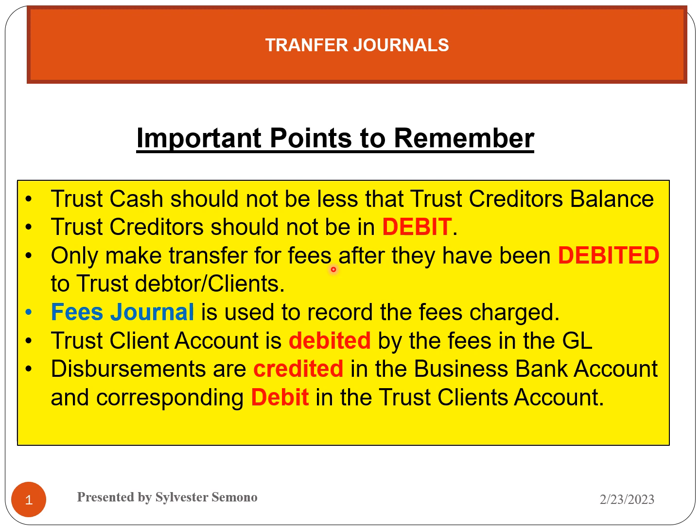After charging the fees, the client is owing us, and we compile what we call the fees general journal. There are different types of journals — the cash book receipts, cash book payments, sales journal, sales returns, and petty cash — all called subsidiary journals or books of prime entry. These books are used to summarize transactions according to their nature: all cash received goes to the cash book receipts, all cash payments to the cash book payments, and all petty cash payments to the petty cash journal.